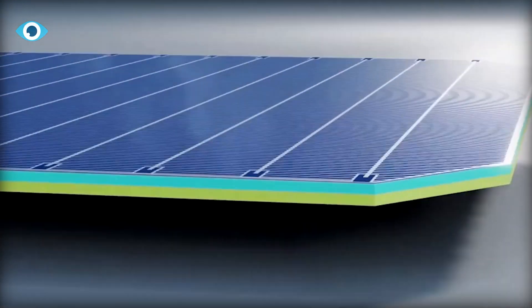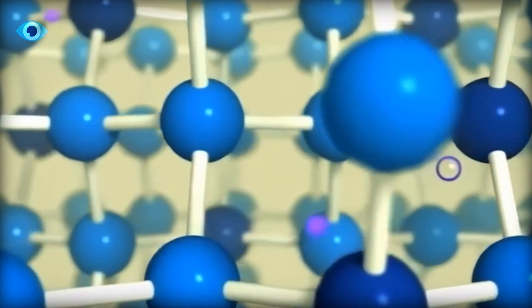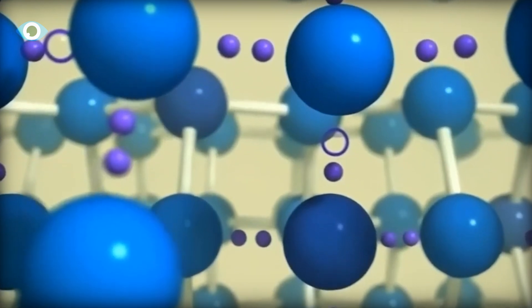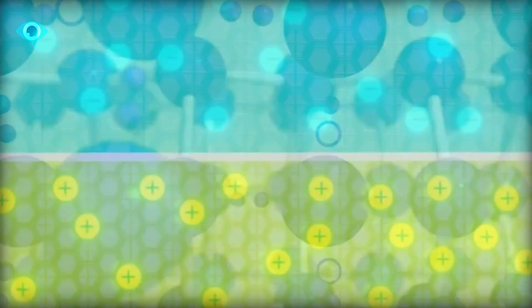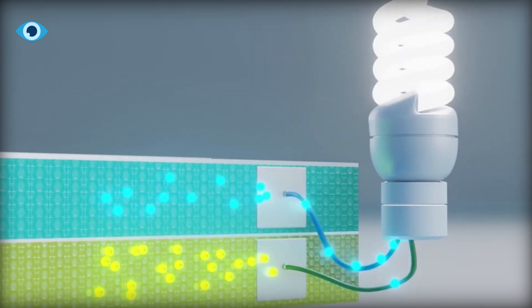In tandem solar cells, perovskite absorbs high-energy photons from sunlight, while the underlying silicon layer absorbs lower-energy photons. This tandem approach allows for more efficient utilization of the solar spectrum and higher overall energy conversion efficiency.